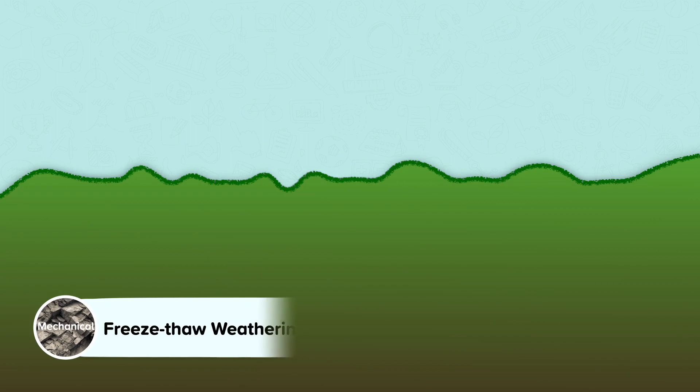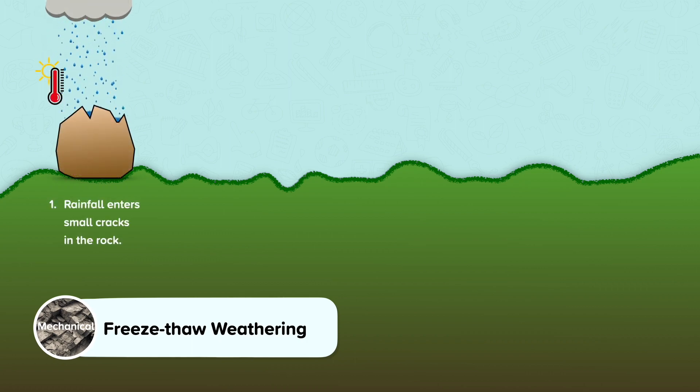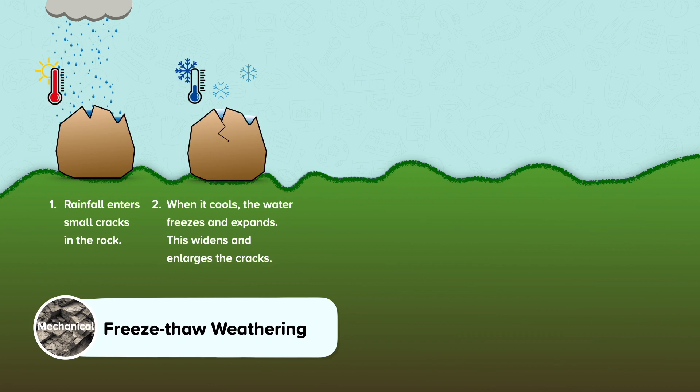Freeze-thaw weathering is a type of mechanical weathering. Let's look at it step by step. Rainfall enters small cracks in the rock. When it cools, the water freezes and expands.